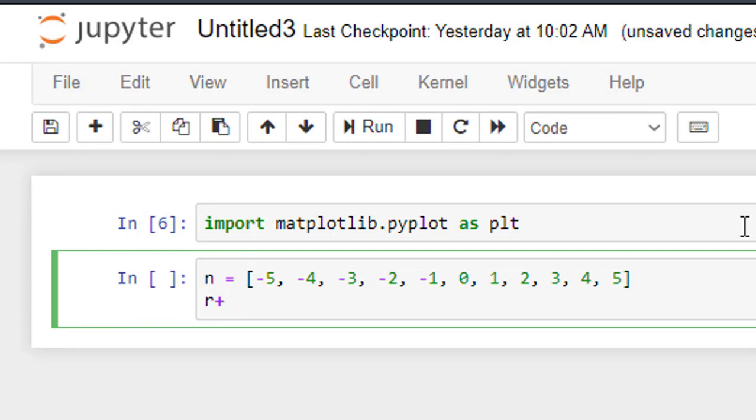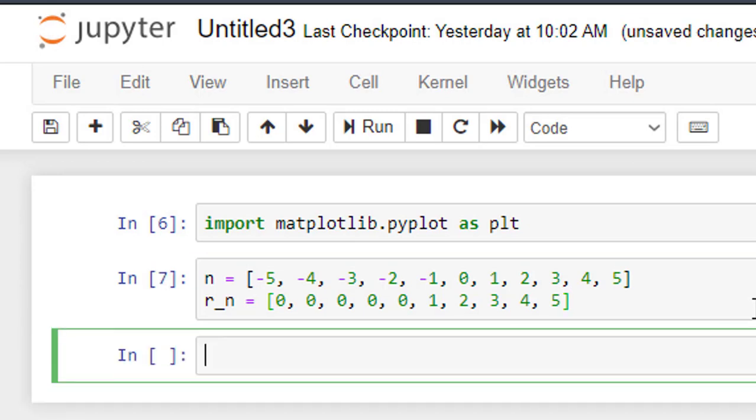And r_n, r underscore n, we shall try to plot the dependent variable. So these are the dependent and independent variables.